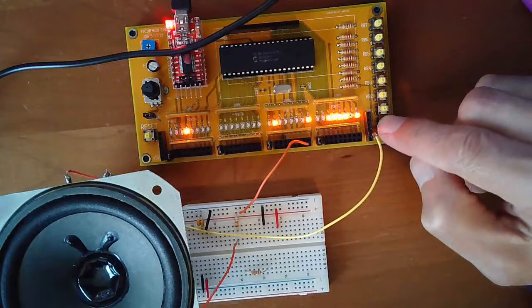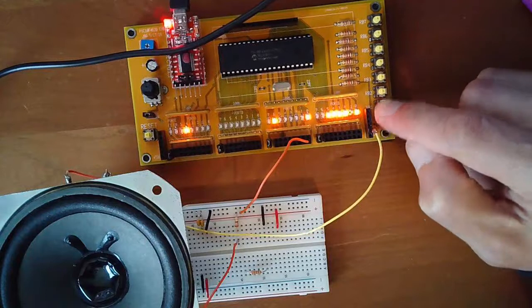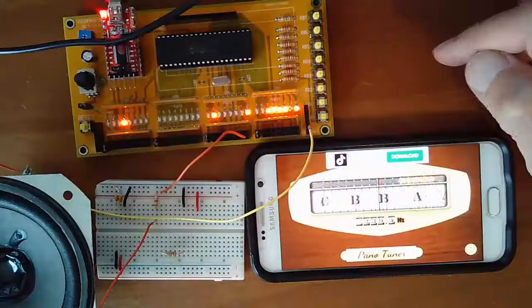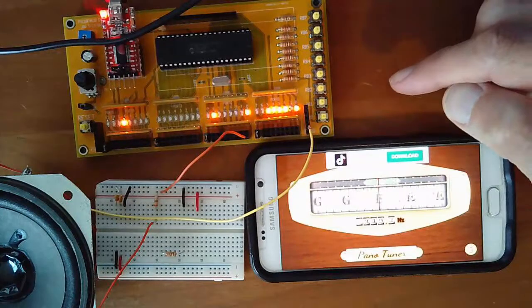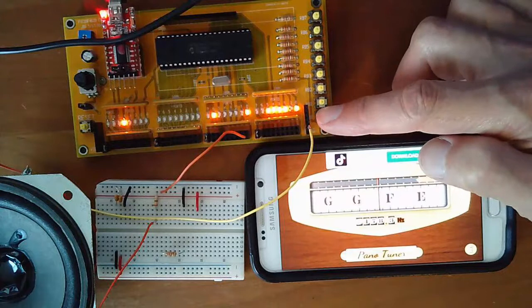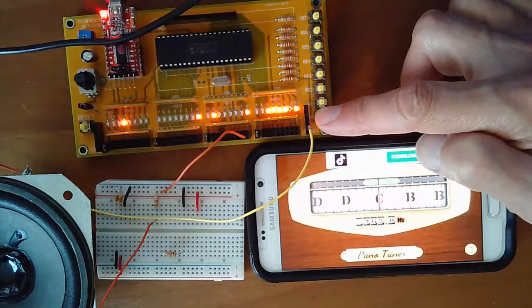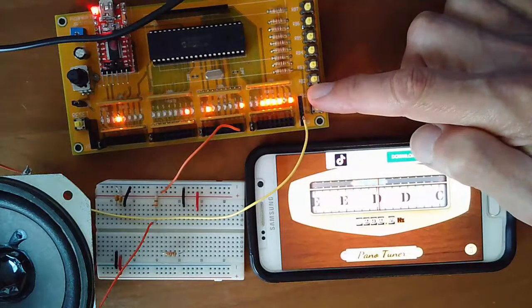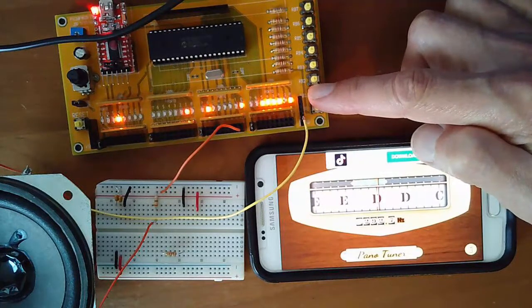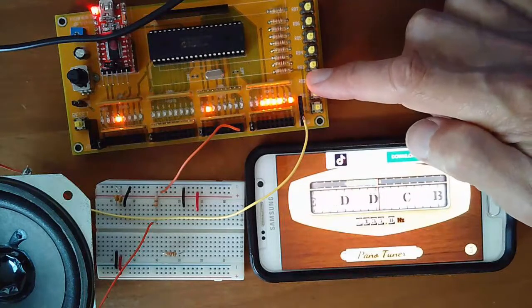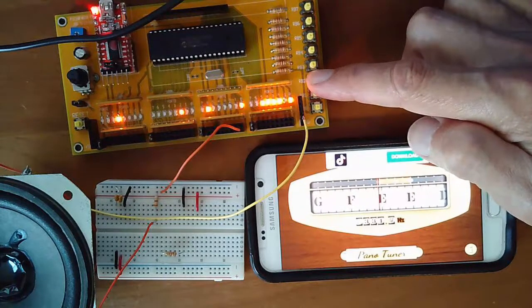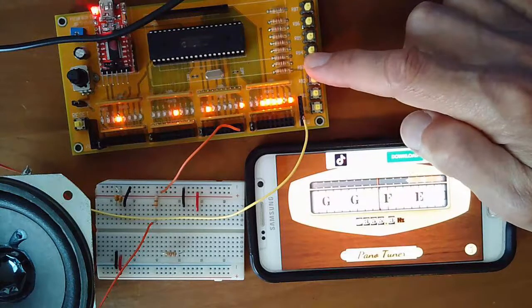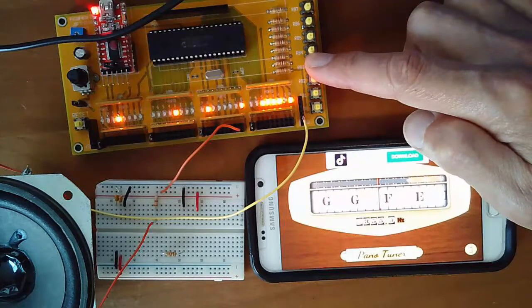Once the code is downloaded, you can then check. I've got my four notes. If you have an oscilloscope, you can measure the frequency. Otherwise, you can do an app like the piano tuner. 261.9 hertz. Next note. 292.7 hertz. 331.8 hertz. 355.4 hertz.